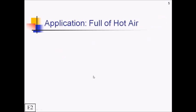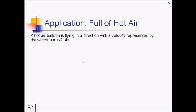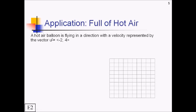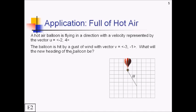For our next example, we're going to take a real life look at what happens when two different vectors interact with each other. So let's say we have a hot air balloon flying in a direction with a velocity represented as negative two comma four. And then let's say that we have a balloon being hit by a gust of wind over here that itself is providing a vector of negative three comma negative one. We'd like to know what the new heading of the balloon is going to be with both of these forces acting at once. So we're essentially trying to figure out what happens when we add these two vectors together.